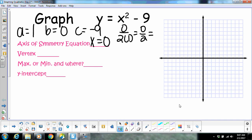Alright, so then our X value of our vertex is also 0. Okay, how do we find the Y value? Plug it in. Alright, so I'm going to say 0 squared minus 9. 0 squared is 0 minus 9, negative 9.